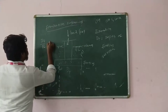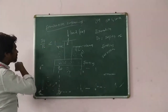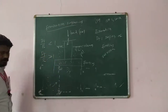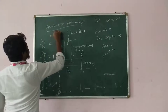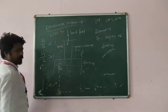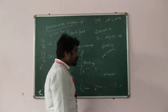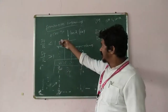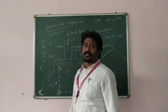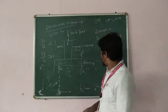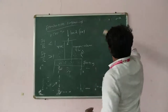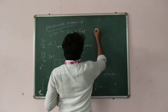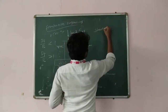Based on the depth-to-width ratio Df/B: if Df/B is less than or equal to 1, that is called a shallow foundation. If Df/B is greater than 1, that is a deep foundation. So we have two types: shallow foundation and deep foundation.